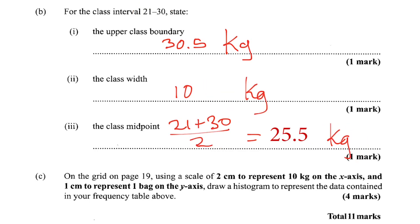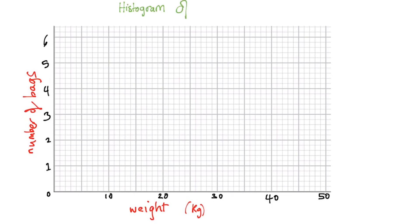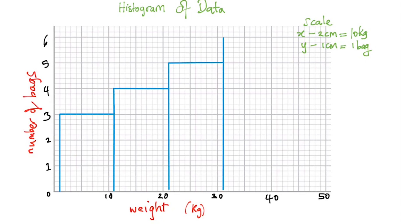All right, so let's see what next they want. On a grid on page 19, they gave us a graph. Using a scale of 2 centimeters to represent — they gave us a scale, so you want to use that scale. Draw a histogram. There are some points about histograms to note when drawing them, to represent the data contained in your frequency table. Time for the histogram. I label my axes: number of bags, weights in kg. I put in my title, and I drop a little scale — but you don't need to give the scale if they already provide it.